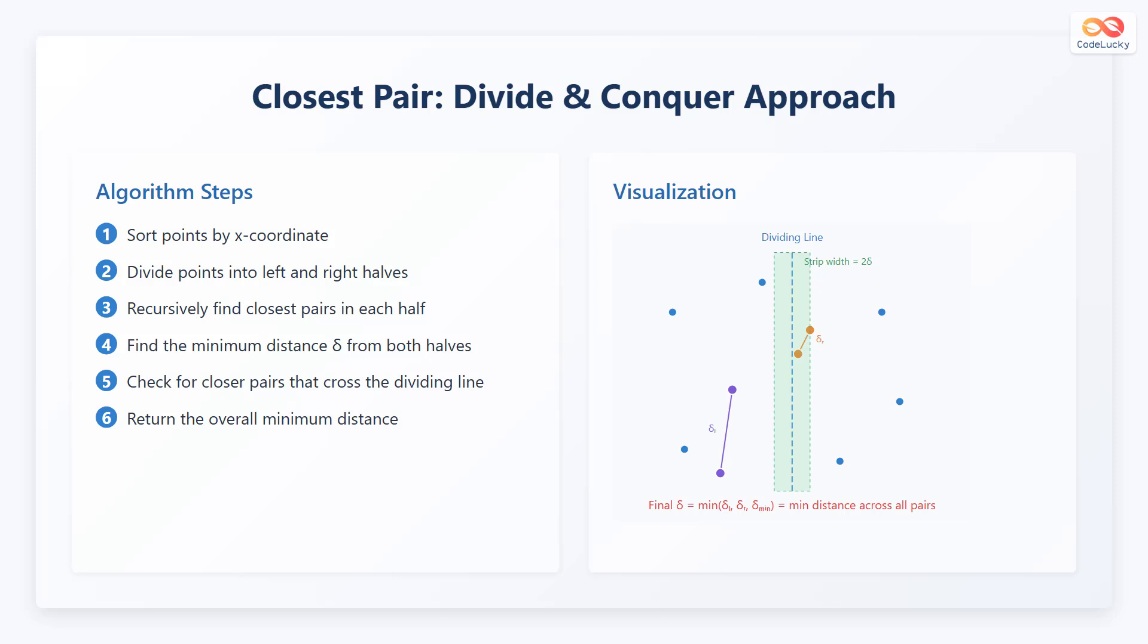Here are the steps of the divide and conquer approach. Step 1, sort points by the X coordinate. Step 2, divide the points into left and right halves. Step 3, recursively find the closest pairs in each half.